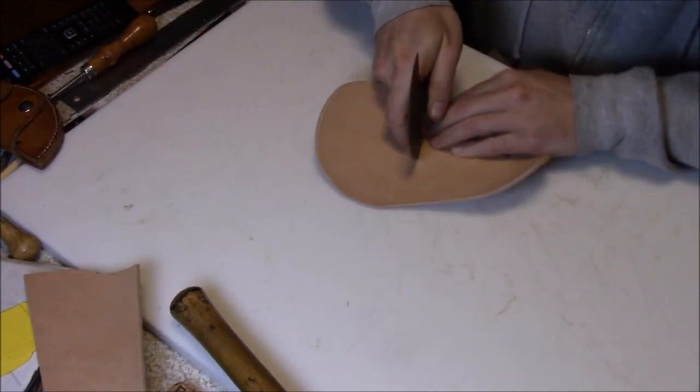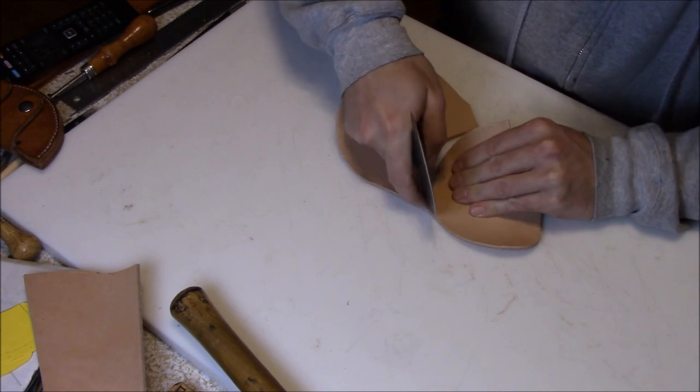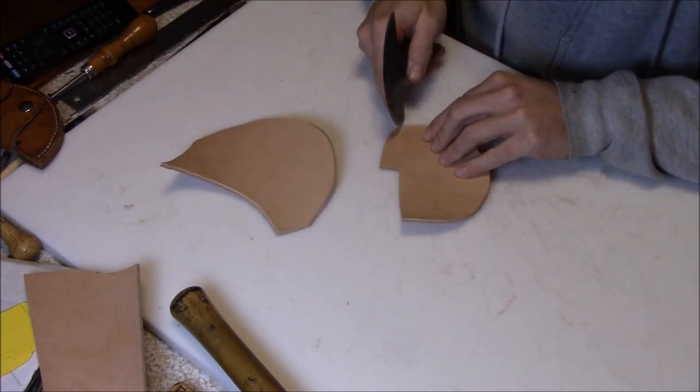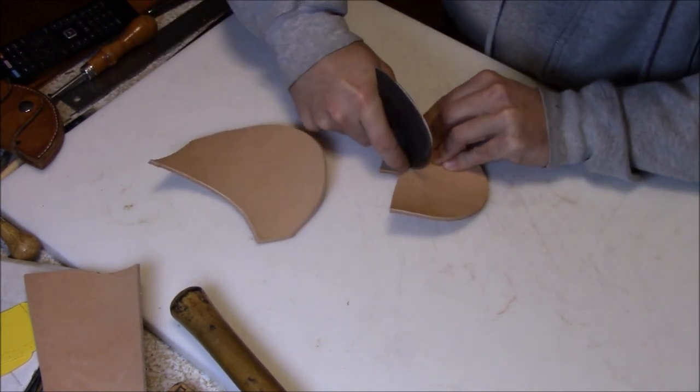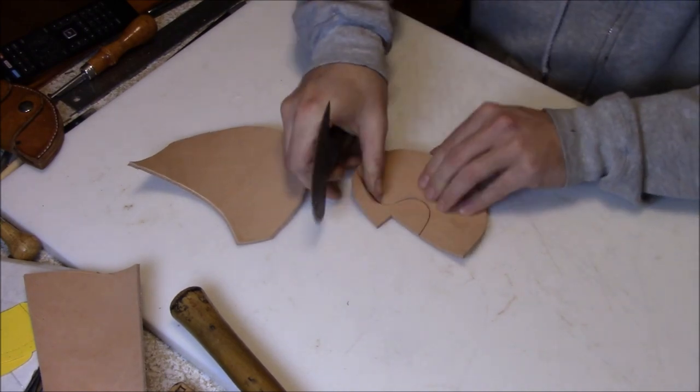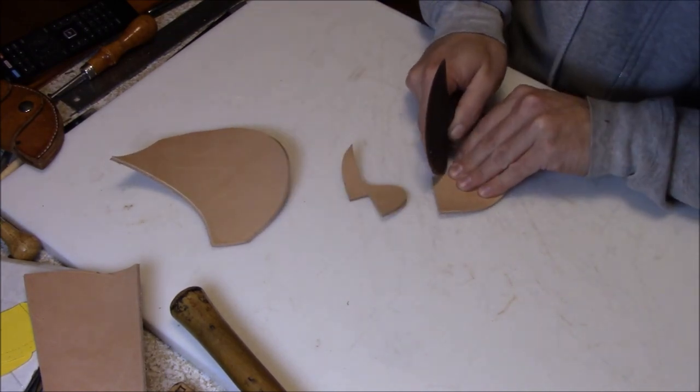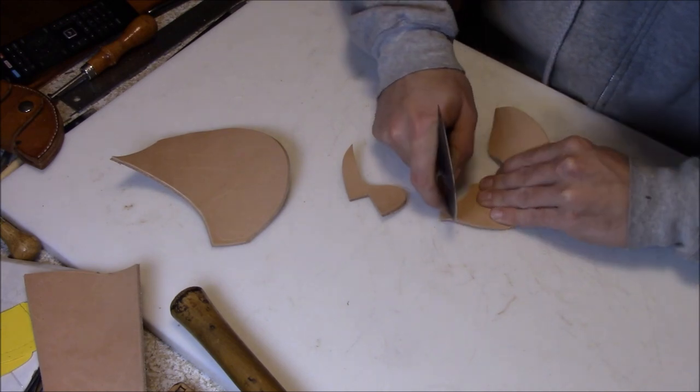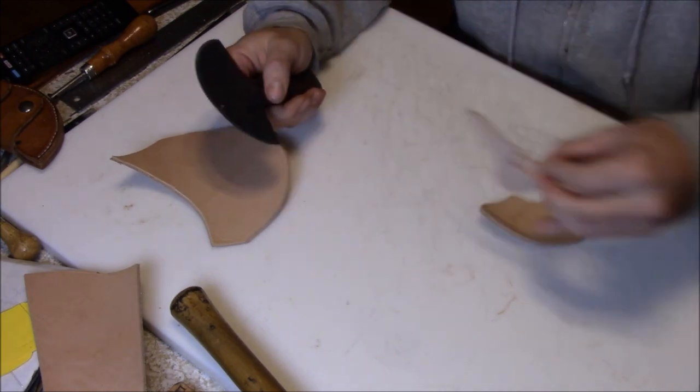Sometimes you can get away with cutting a straight piece and wetting it down and shaping it to the edge so you can just cut a piece that's a half-inch wide strip. But this has a pretty drastic curve and then it's got that right angle turn up at the top, so I'm gonna have to cut it to shape for the knife sheath.